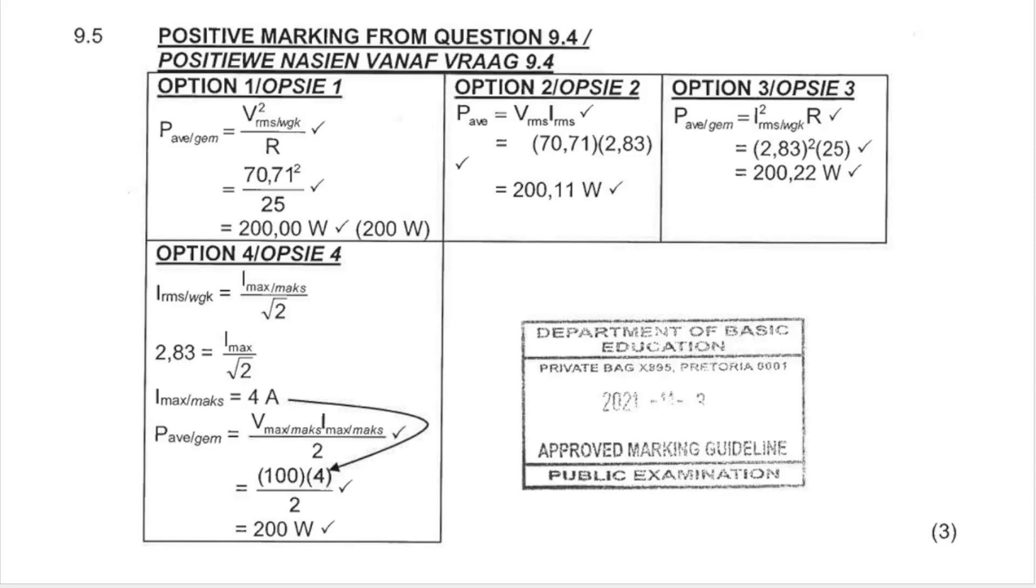And you'll see here, according to the marking guidelines for the final exam, here are three different options depending on the formula that you use. You see that you get very similar but not identical answers depending on the formula that you use. And they will accept any of them as long as you always give your blank formula, sub in, answer with unit.